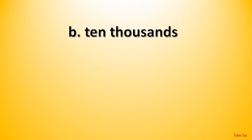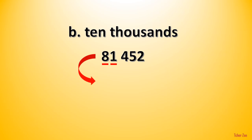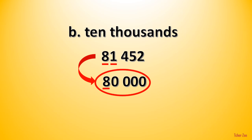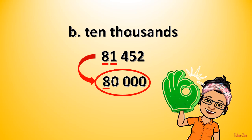Let's round off 81,452 to the nearest ten thousands. What is the digit in the place value to be rounded off? It is 8. We now look at the digit to its right, which is 1. Since the digit to the right is from 0 to 4, we round down. We simply copy the digit 8, and then all remaining digits are changed to 0. So 81,452 rounded off to the nearest ten thousands is 80,000.